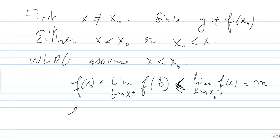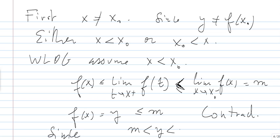Meaning that F(x) equals y is less than or equal to m. And this is a contradiction, because we assumed that y is between little m and capital M.